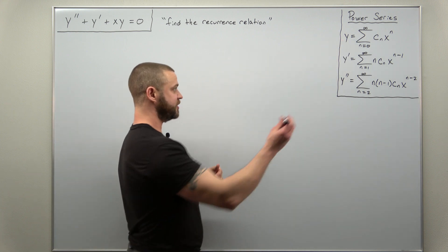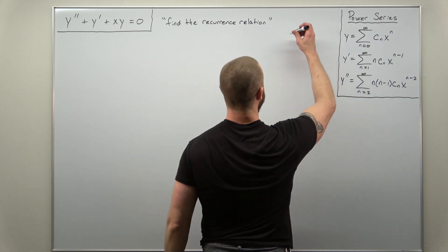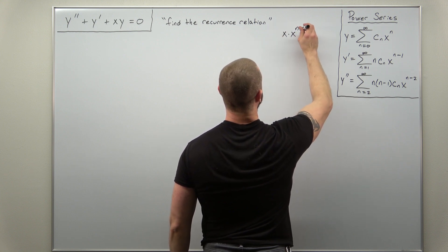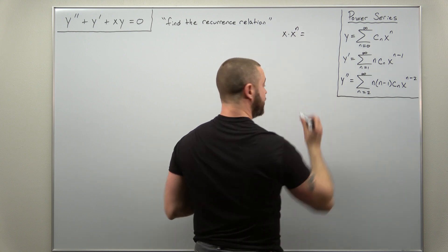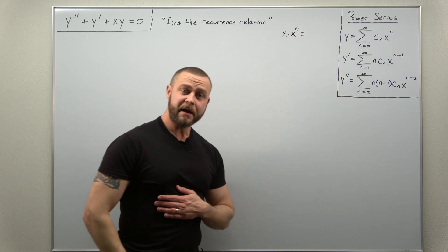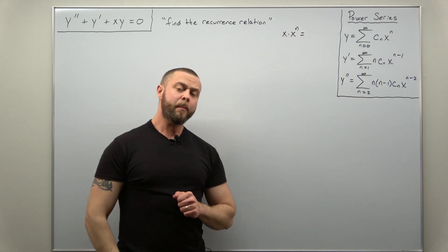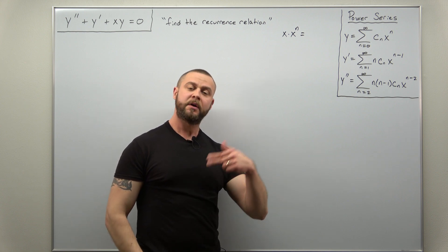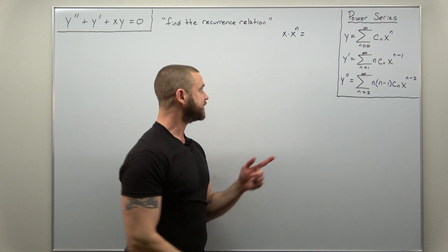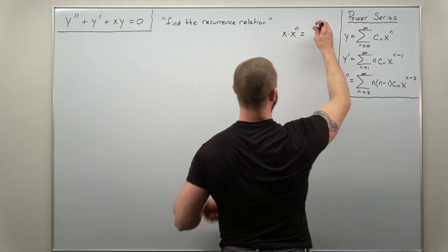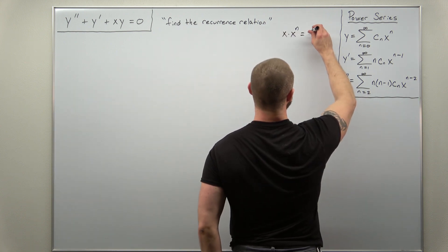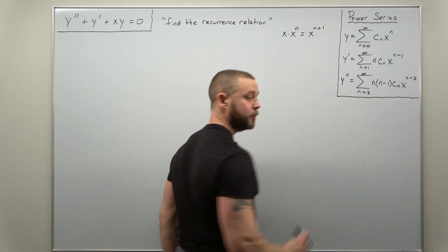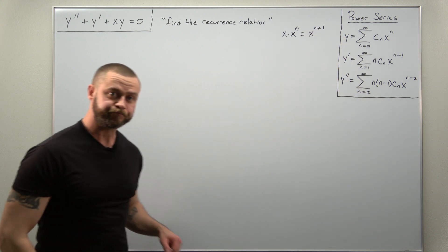Let's point out one place an error could be made: forgetting that this power of x is multiplying y, which has x to the n. So if we just work that out, x times x to the n — multiply your variables and add their exponents — this will bump up to x to the n plus one.